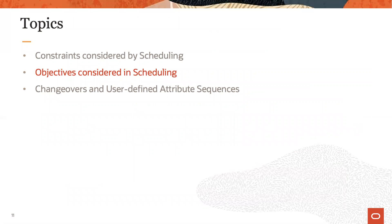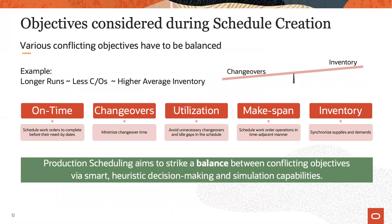Several different business objectives are relevant during schedule generation. These include on-time completion, changeovers, resource utilization, makespan, and inventory levels. While optimizing a schedule with respect to just one of these objectives in a real-world model is not an easy task, the complexity increases enormously when considering all objectives at the same time. Of course, we always have to keep the active constraints in mind as well.